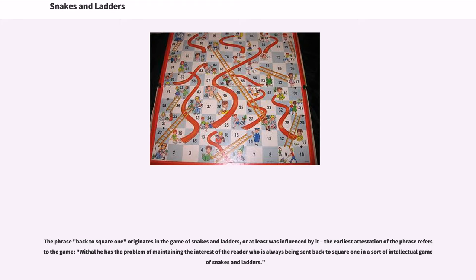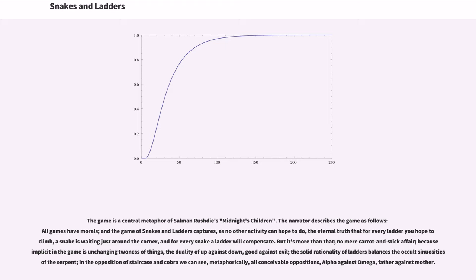The phrase 'back to square one' originates in the game of Snakes and Ladders, or at least was influenced by it. The earliest attestation of the phrase refers to the game: 'with all he has the problem of maintaining the interest of the reader who is always being sent back to square one in a sort of intellectual game of snakes and ladders.' The game is a central metaphor of Salman Rushdie's Midnight's Children. The narrator describes the game as follows: 'All games have morals, and the game of Snakes and Ladders captures, as no other activity can hope to do...'